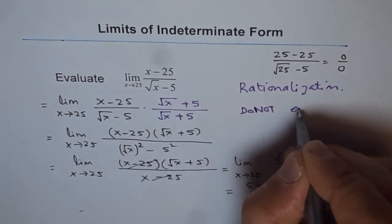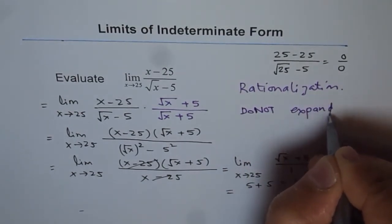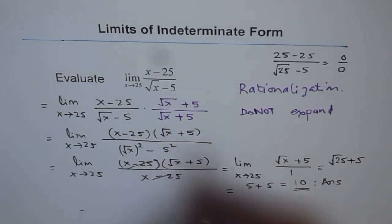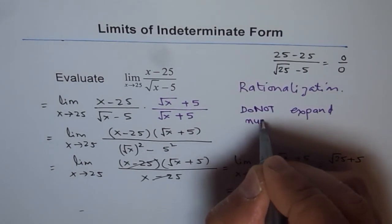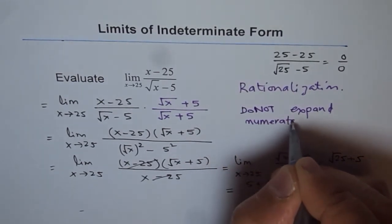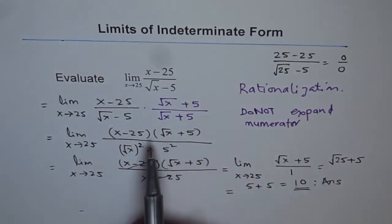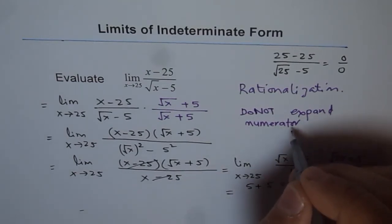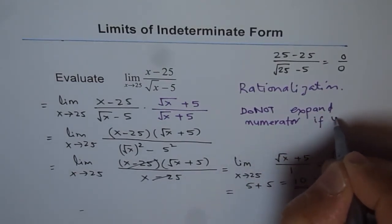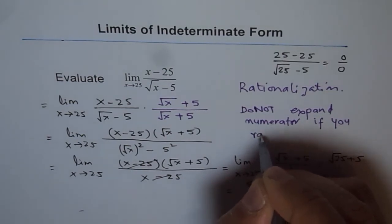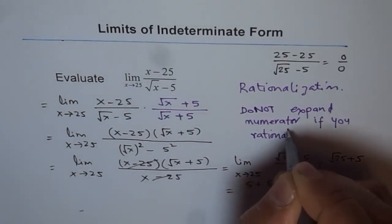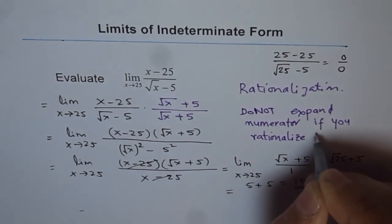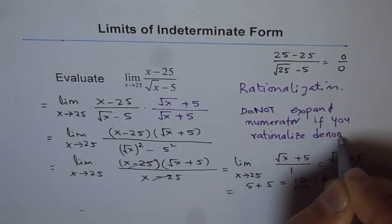Do not expand. So when you are rationalizing denominator, do not expand numerator. Do you understand? That helps. You can see, if you would have expanded this, we would have lost this factor. That's the whole idea. So do not expand the numerator if you rationalize denominator. That is important.